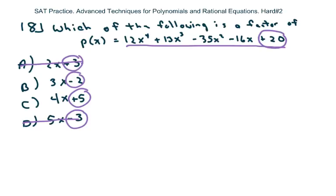Negative 2 divides 20 and 5 divides 20, so we'll just have to do long division. We'll start with option b and hope we get lucky. When it's a factor, the remainder is 0. So we're going to do long division starting with 3x minus 2 and see if it divides this polynomial.